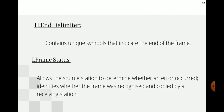The End Delimiter (ED) contains unique symbols indicating the end of the frame. The Frame Status field allows the source station to determine whether an error occurred and whether the frame was recognized and copied by the receiving station. Once the receiver copies the message, it sets the frame status to indicate receipt, and the empty frame is routed back to the sender as an acknowledgement, after which the token continues around the ring.